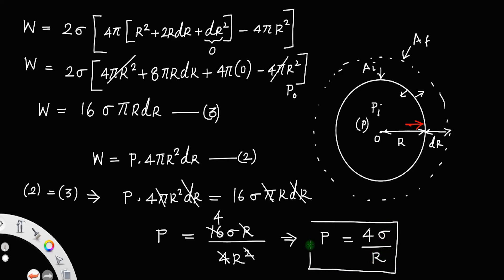In the case of a drop we got P = 2σ/r, whereas here for an air bubble it is P = 4σ/r. Clearly, with an increase in radius the pressure decreases, and with an increase in surface tension the excess pressure increases.